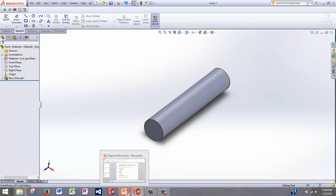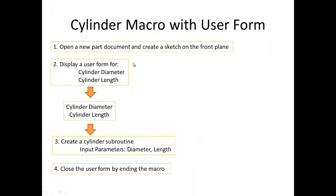What we're going to do in this tutorial is take the old code that made a cylinder of fixed length and diameter and add a user form so it's more flexible. To do this, we're going to need to open a new document, create a new sketch on the front plane, display a user form that asks the user for the diameter and length, pass those parameters into a create cylinder subroutine, and then close the user form by ending the macro.